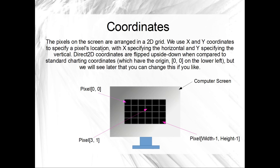Coordinates. The pixels on a computer screen are referenced with coordinates. The computer screen is obviously a 2D grid of some sort, and the coordinates on a computer screen are referenced with X and Y. The X axis goes across the screen horizontally from left to right, and the Y axis goes up and down the screen. Now, it's a little bit weird, but with computer programming generally, and Direct2D is certainly an example of this.